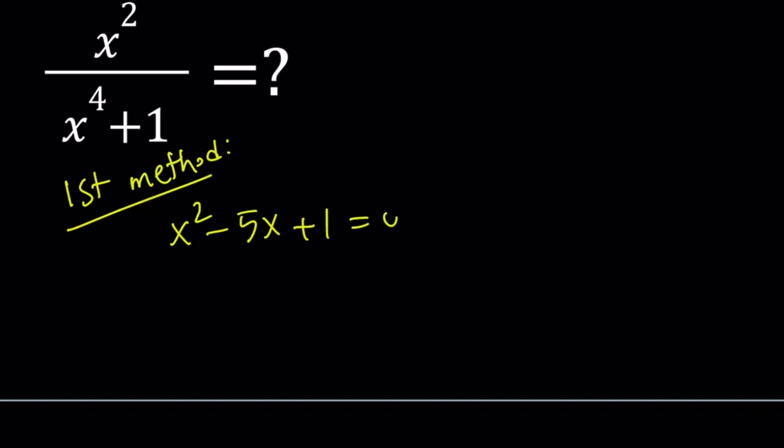x squared minus 5x plus 1 is equal to 0. If you solve this quadratic equation, x becomes 5 plus minus the square root of 21 over 2. Let's go ahead and use the positive version, 5 plus root 21 over 2. Now would it matter if you used the other one? It wouldn't. You can check it out. So this is x.